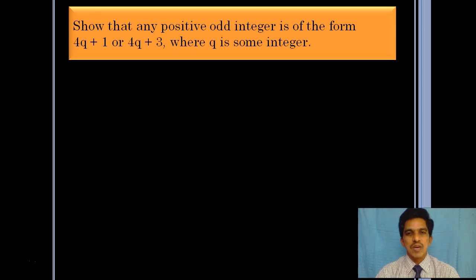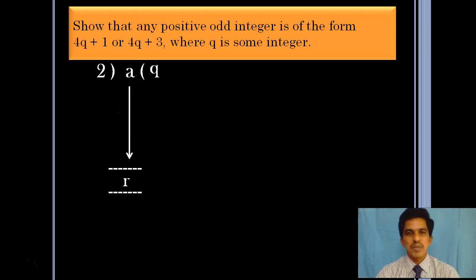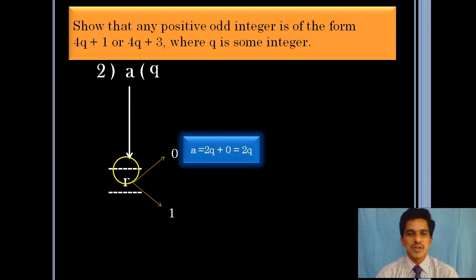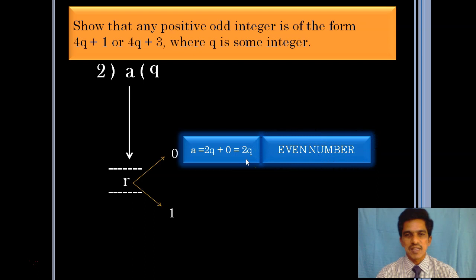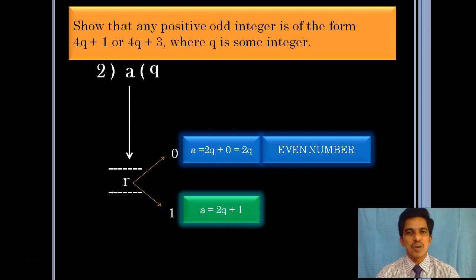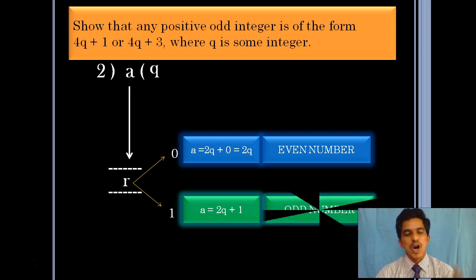Before going to the actual solution, let us revise odd and even numbers. When you divide a particular number by 2, the possibilities for the remainder are 0 or 1. If the remainder is 0, the number is 2q plus 0, which is 2q — an even number. If the remainder is 1, the number is 2q plus 1 — an odd number. So if a number is a multiple of 2, it is even; if it is 2 times a multiple plus 1, it is odd.